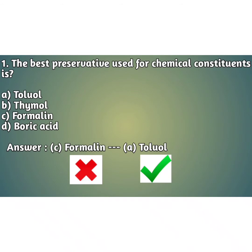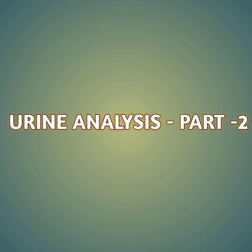From our Part 1 on urine analysis, I want to make a small correction. In the first question regarding the best preservative used for chemical constraint, the answer I gave — answer C, formalin — is wrong. The correct answer is answer A, toluol. Please make a small correction there. Now let's move on to today's video.